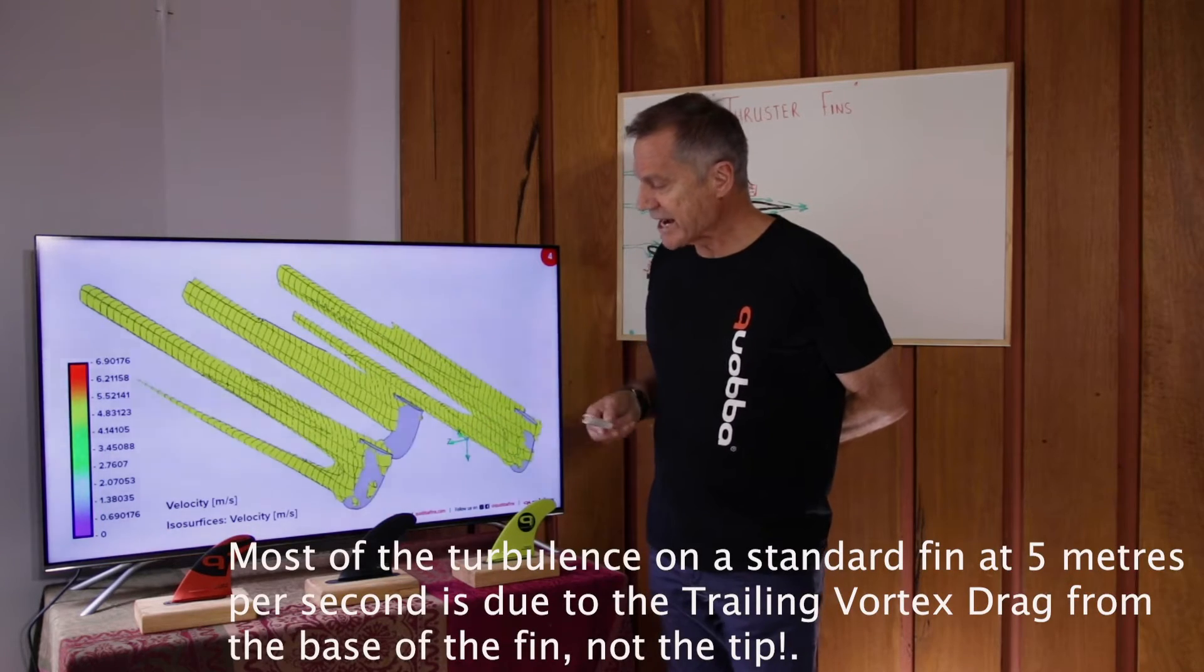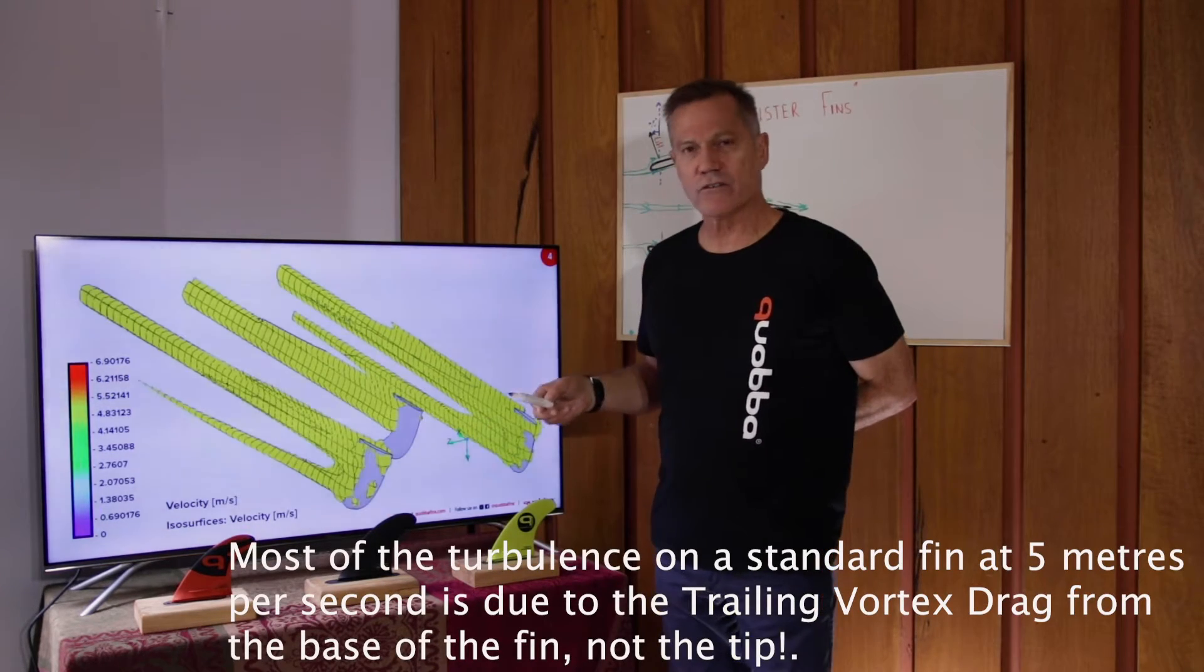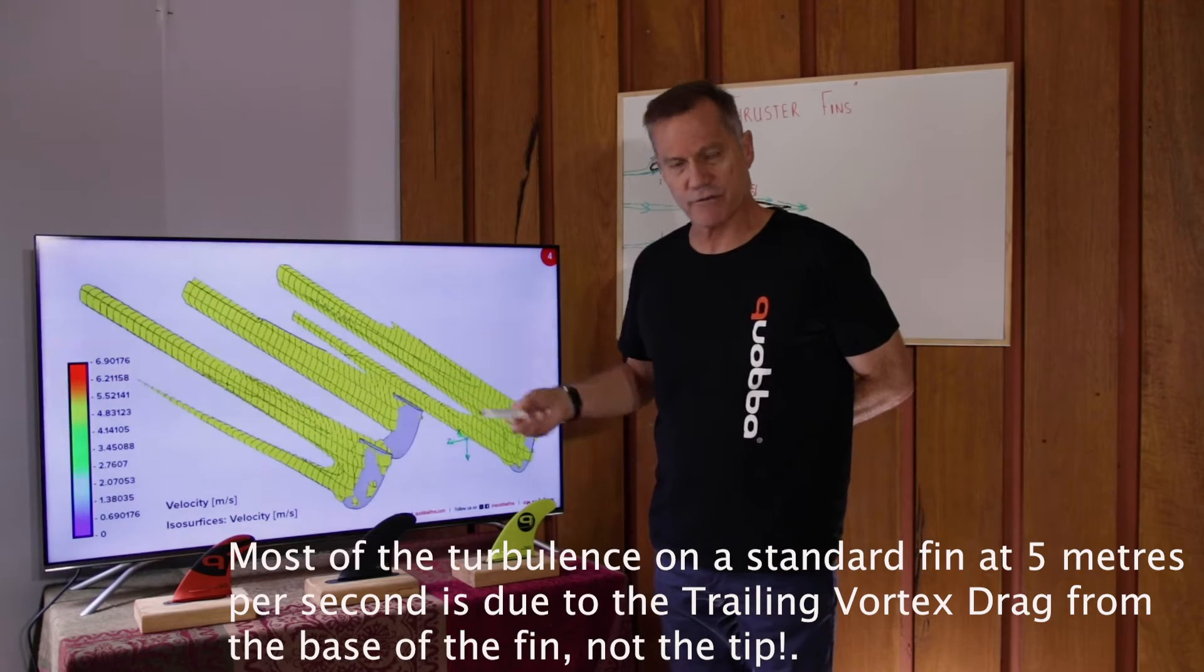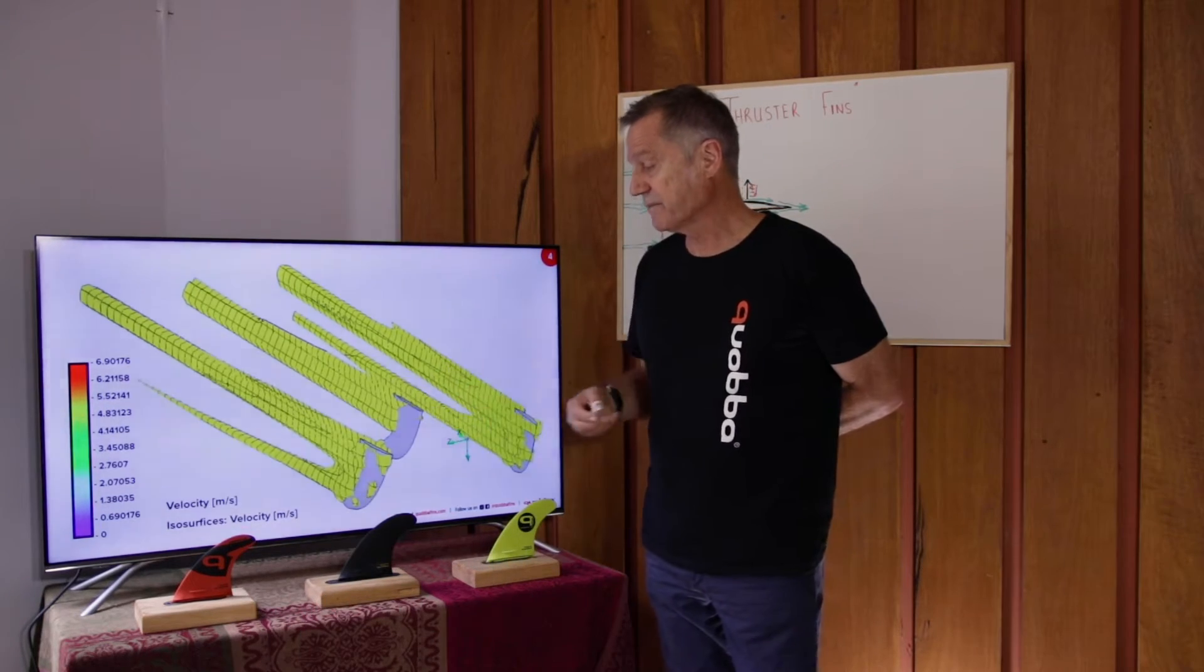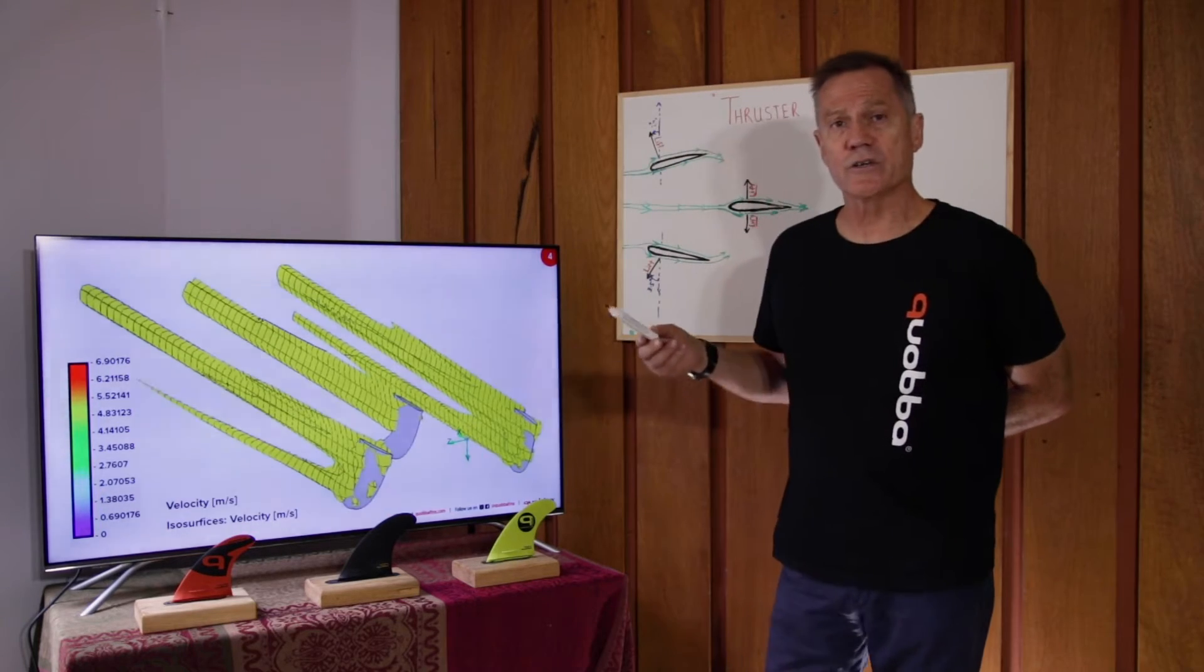In fact, it's about 80% of the overall trailing vortex drag, which slows the fin system down, slows the surfboard down, is at the base.